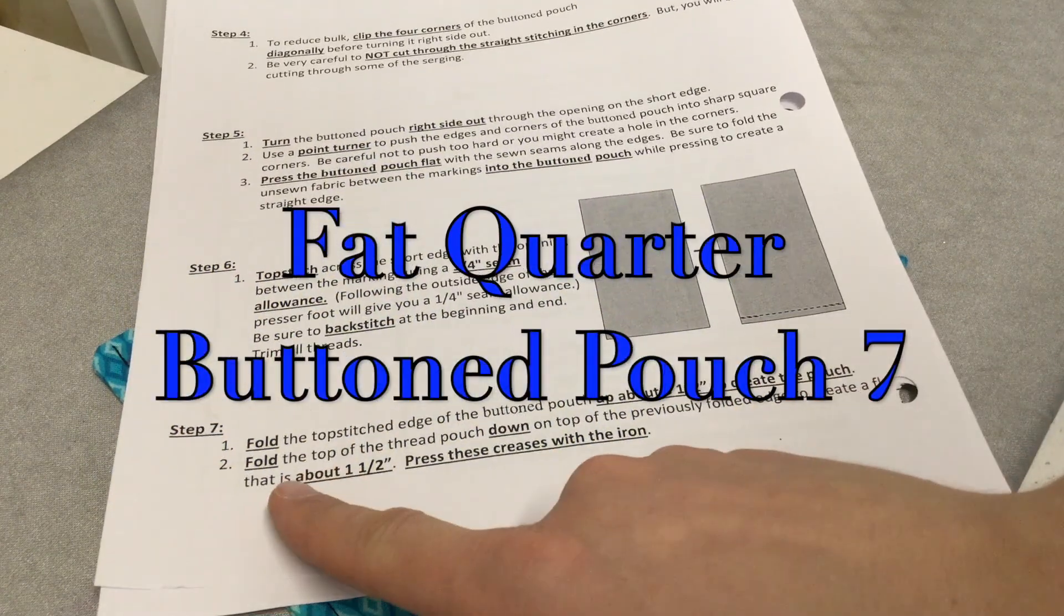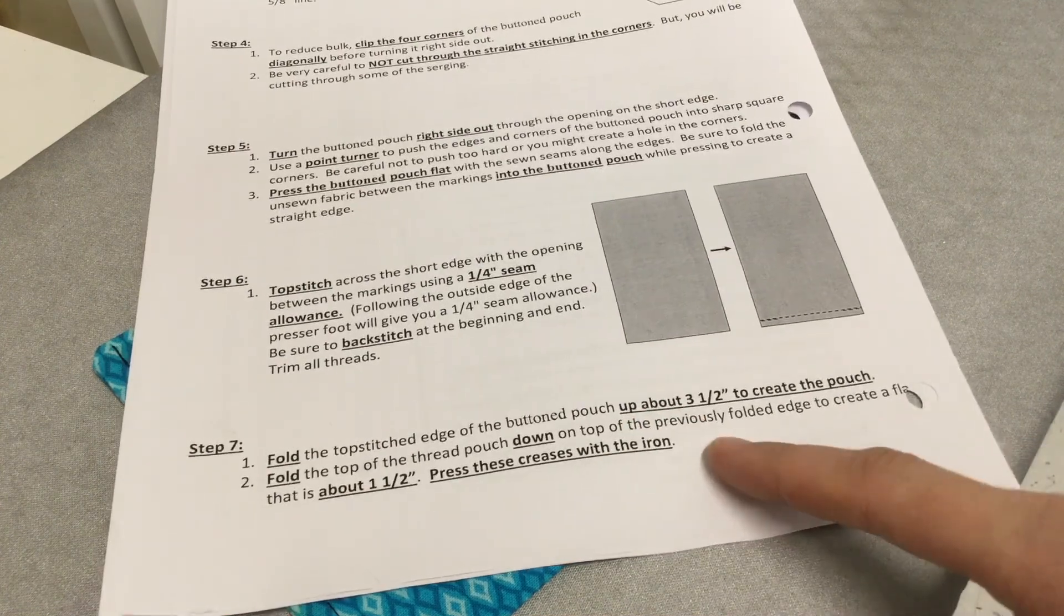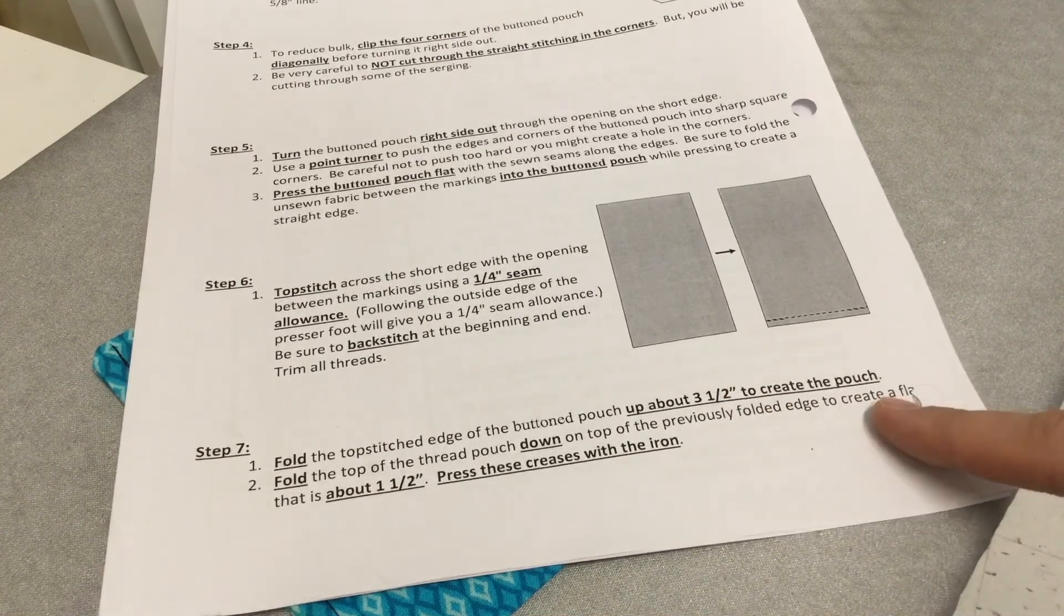Next step, we are going to fold the top stitch edge of the button pouch up at about 3 1/2 inches to create the pouch portion.